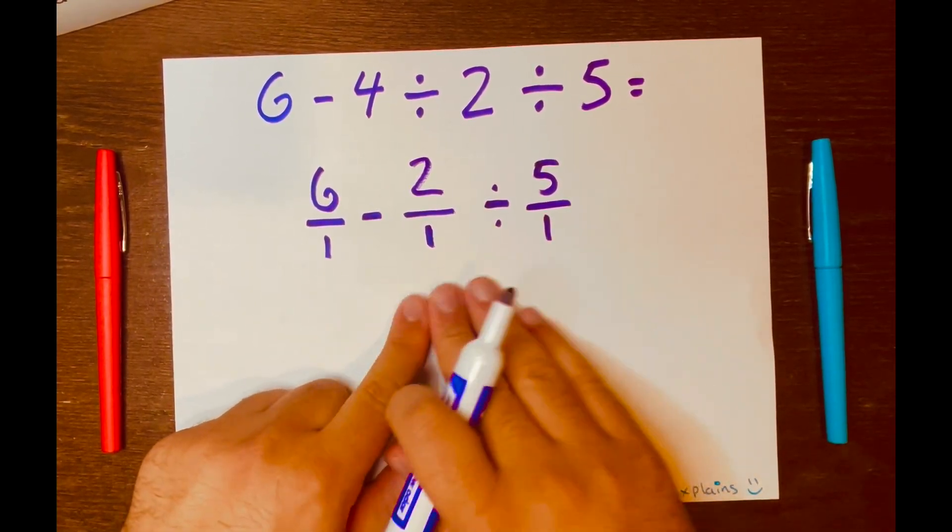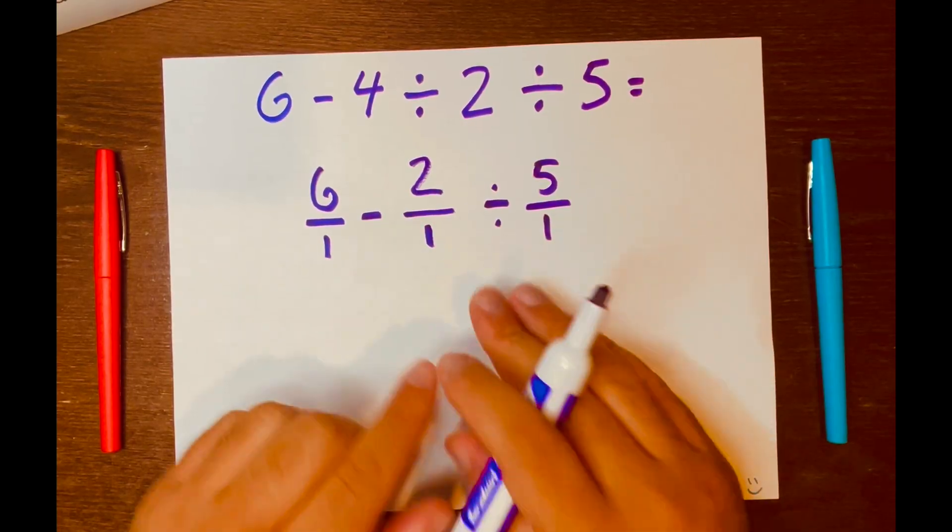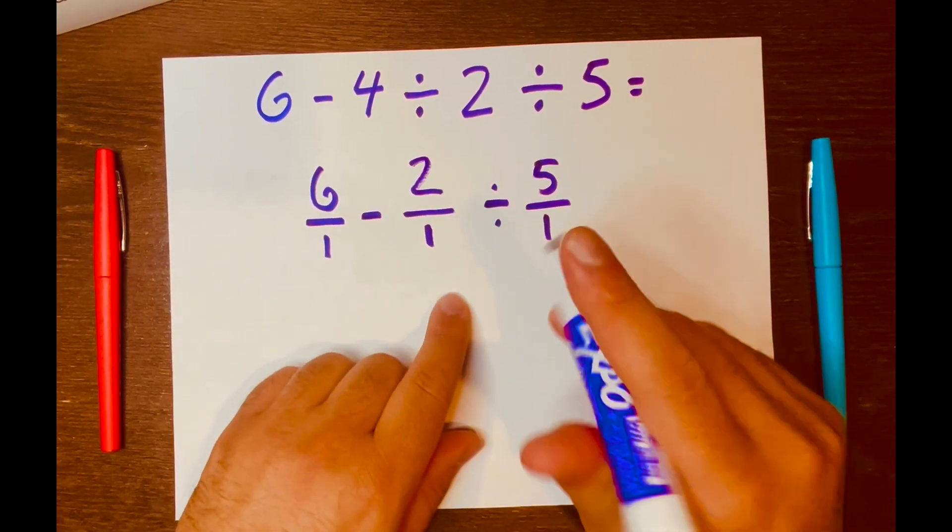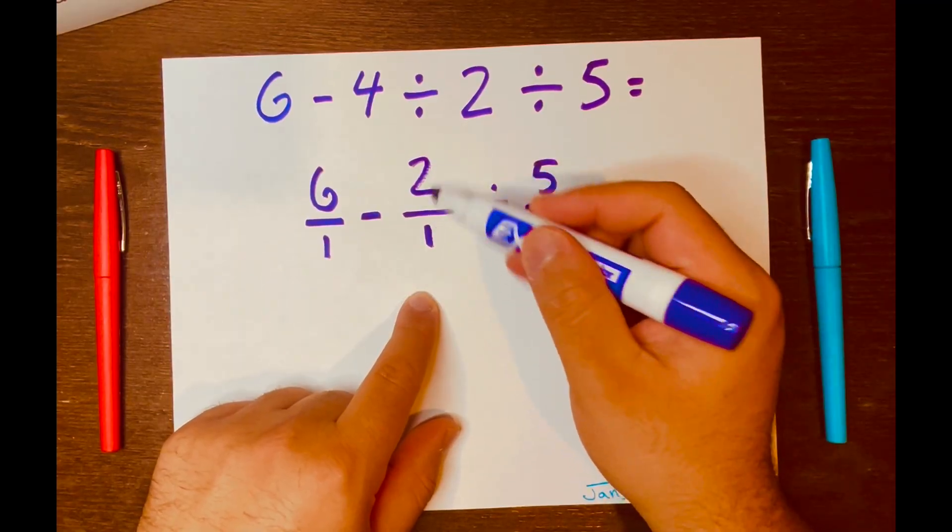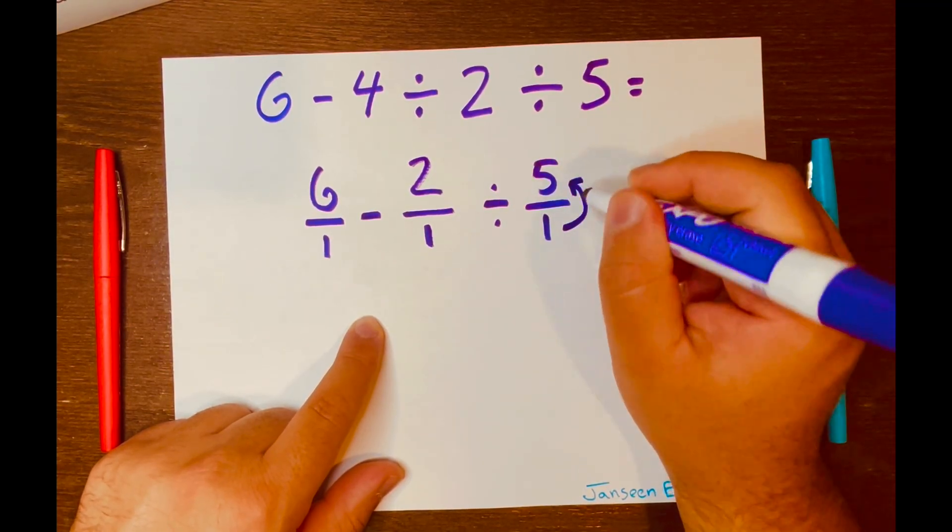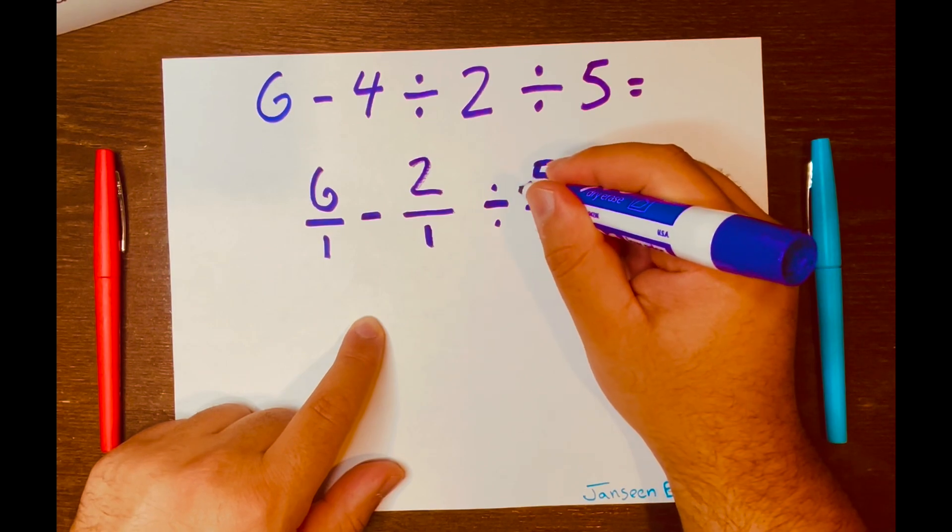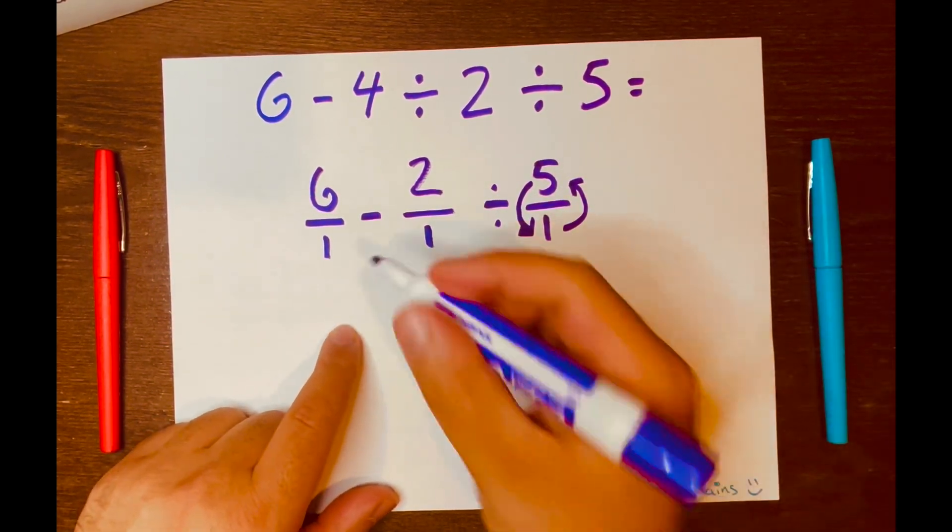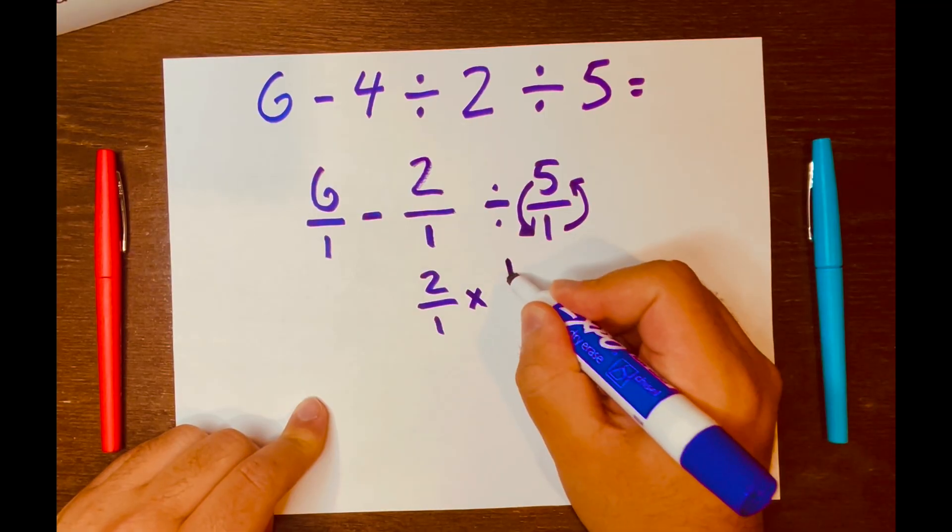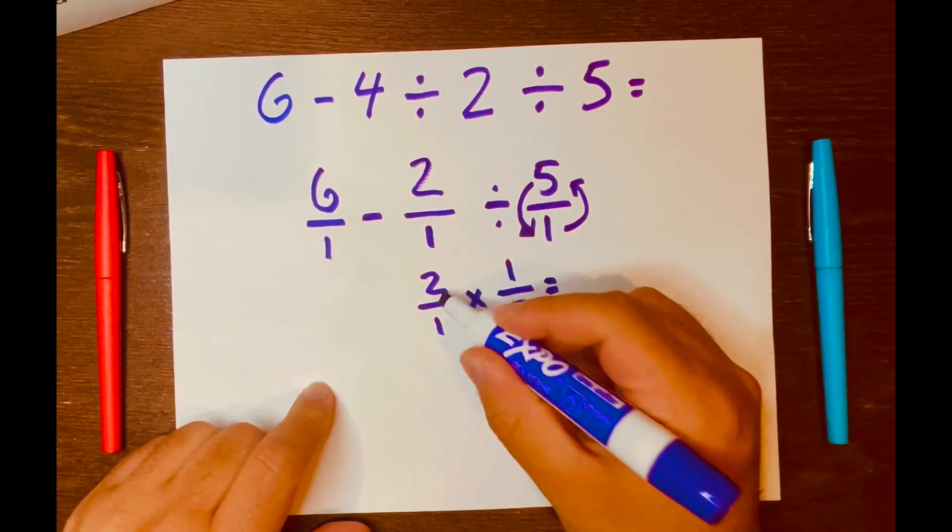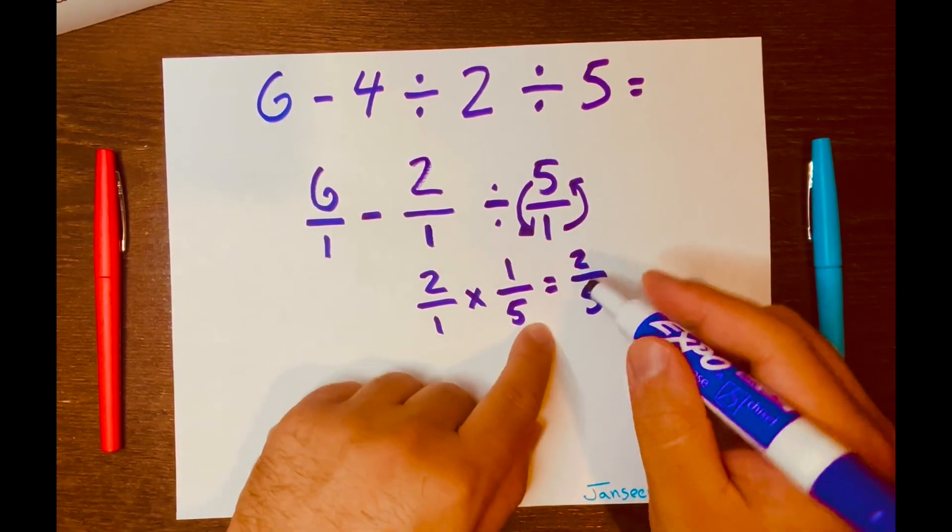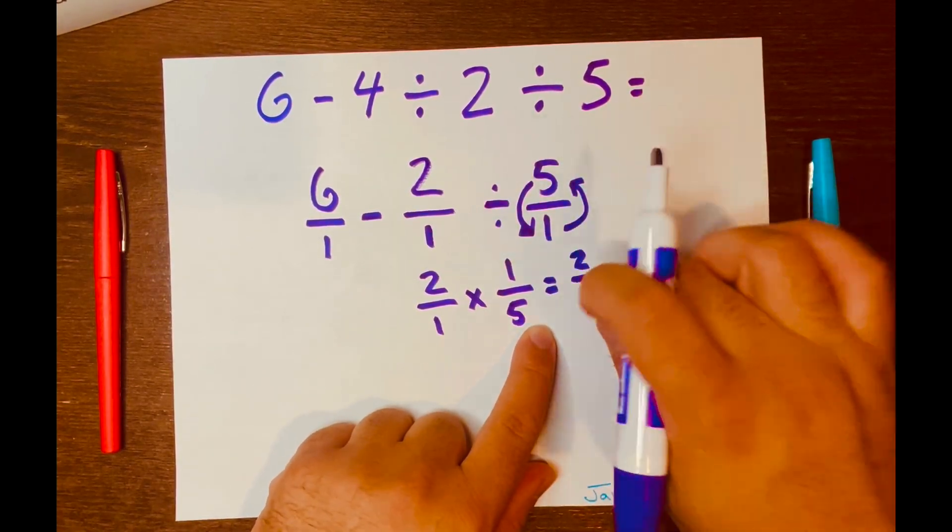Again, you read from left to right. We know subtraction will not go first. It will be division will go first. So we're going to use that keep-change-flip method. So we're going to keep 2/1, we're going to change the division symbol to multiplication, and we're going to flip this fraction. So the 1 will go on top of the fraction and the 5 will go at the bottom of the fraction. So it'll be written like this: 2/1 × 1/5. So 2 × 1 is 2, 1 × 5 is 5. And this cannot be simplified further, so we keep it 2/5.